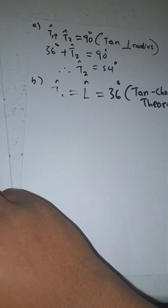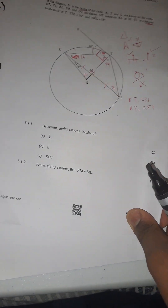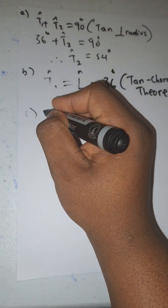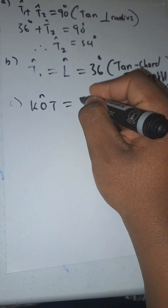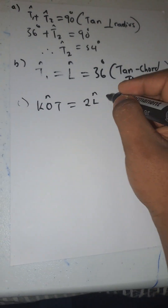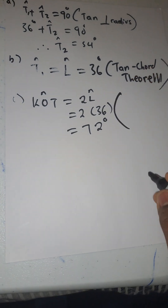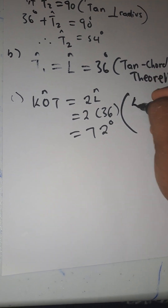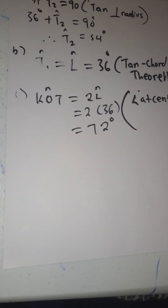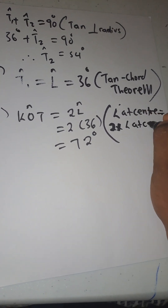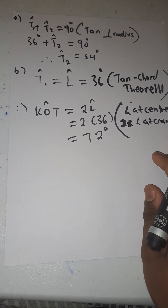Part c: they want KOT. I already found that equals 72 degrees. So: KOT equals two times angle L, which equals 2 times 36, which equals 72 degrees. Reason: angle at the center equals two times the angle at the circumference. Write the full statement.